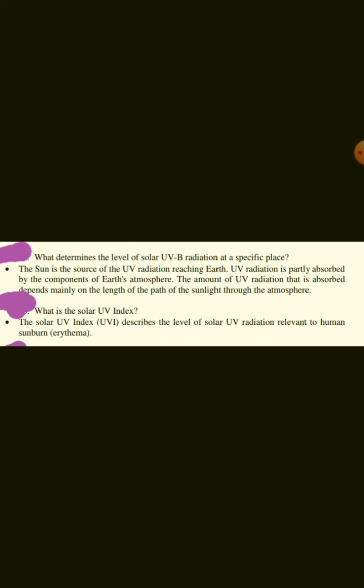What determines the level of solar UV-B radiation at a specific place? The sun is the source of UV radiation reaching Earth. UV radiation is partly absorbed by the components of Earth's atmosphere. The amount of UV radiation that is absorbed depends mainly on the length of the path of the sunlight through the atmosphere.